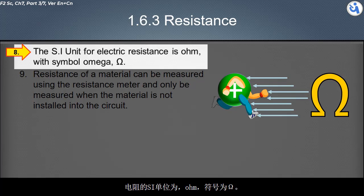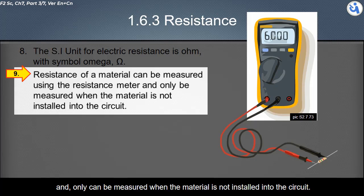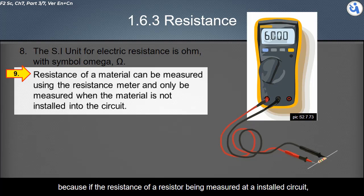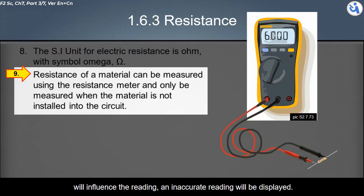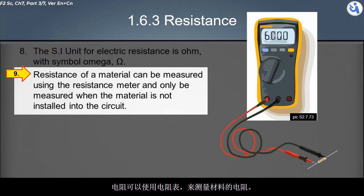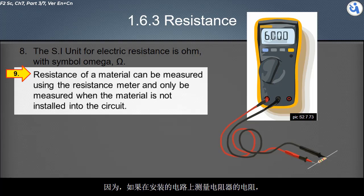The SI unit for resistance is ohm, symbol omega. Resistance can be measured using an ohmmeter, and it can only be measured when the material is not installed in the circuit. Because if you measure the resistor's resistance in an installed circuit, resistance from the wires and the voltage source's internal resistance will affect the reading.